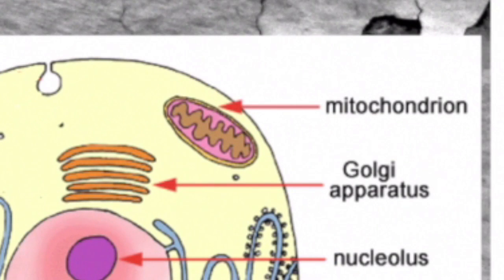Next is mitochondria. The structure is a rod shaped organelle, and the function is to convert energy stored in food to energy that can be used by the cell.